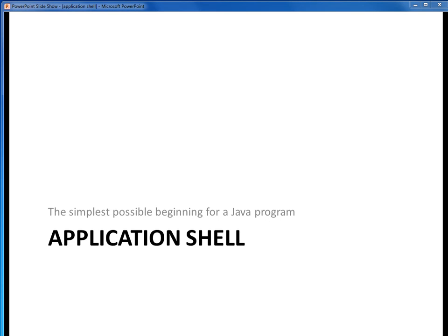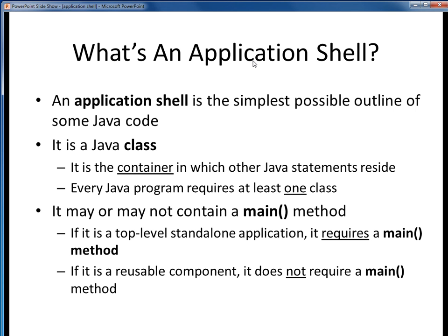In this video lecture, the first Java building block we want to examine is the application shell, which is the simplest possible beginning outline for any new Java program. An application shell represents the simplest possible starting point for any new Java program. We can think of it as being the outermost container in which all the Java code we're going to write is going to reside. It's synonymous with the beginnings of one new Java class.